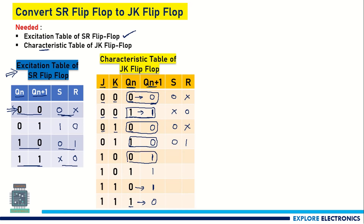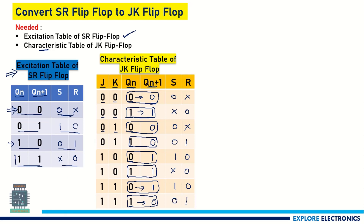Continuing the table: for Qn=1, Qn+1=1 (J=1,K=0 case), SR = X,0. For Qn=0, Qn+1=1 (J=1,K=1 case), SR = 1,0. For Qn=1, Qn+1=0 (J=1,K=1 case), SR = 0,1. Now we have the full table of S and R values. When we provide these values for S and R, the corresponding JK input values will make the SR flip-flop behave as a JK flip-flop.